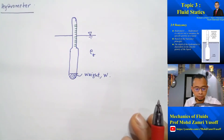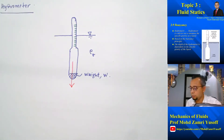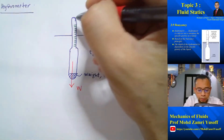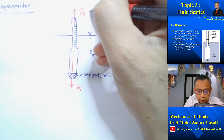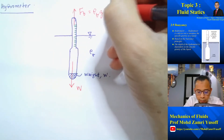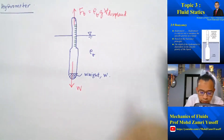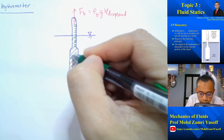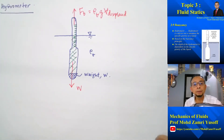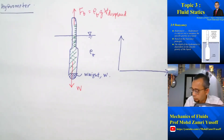Considering the hydrometer: the container holds a known weight acting downward, balanced by the buoyancy force acting upward, which equals the density of the fluid multiplied by the displaced volume. We can calibrate the hydrometer by using several liquids of known density, and then plot a graph of fluid density against displaced volume.